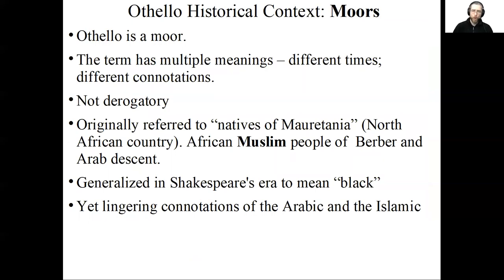Othello himself is a Moor. This term is fraught and complex — it can mean many different things depending on the time and context. By Shakespeare's era it had come to mean generally a black man; it's a generalized term and not a derogatory one. However, when Iago appropriates it and turns it into "his Moorship," it likely is intended as such. Originally it was a reference to people from a particular African nation, the natives of Mauritania. By Shakespeare's period it became this generalized concept, but when people heard it they still had lingering connotations associated with the Arabic and the Islamic.